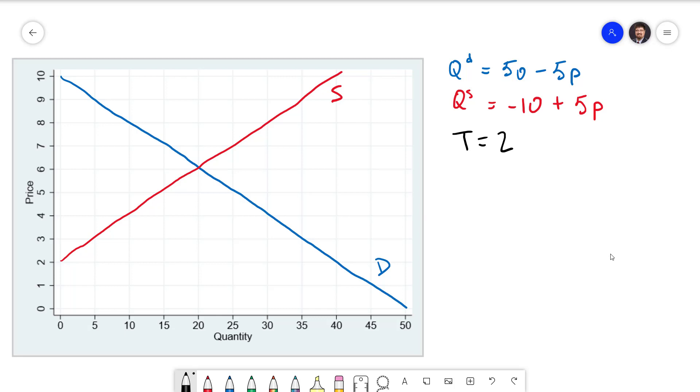Graphically we take a vertical line with a length of 2 and wedge it in between the demand and supply curves. That happens right here at a quantity of 15. 15 units are demanded at a price of 7 and supplied at a price of 5. We could confirm that by plugging them into the demand and supply functions on the right of the screen.